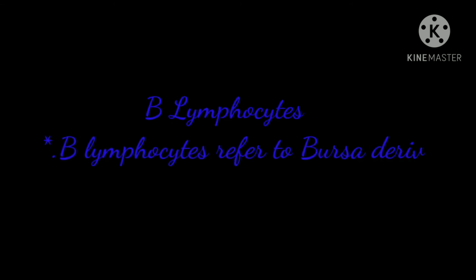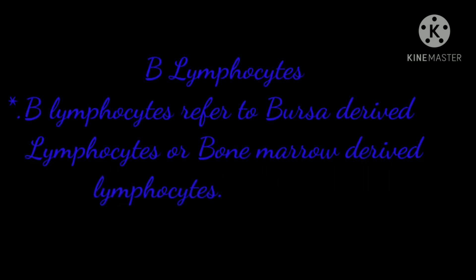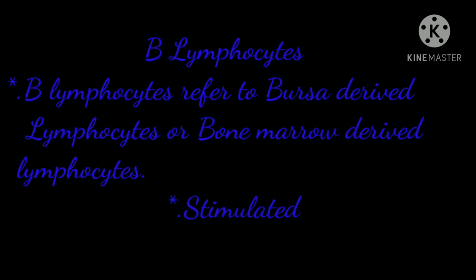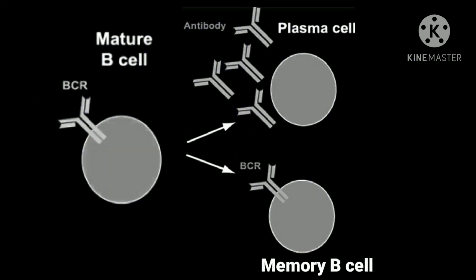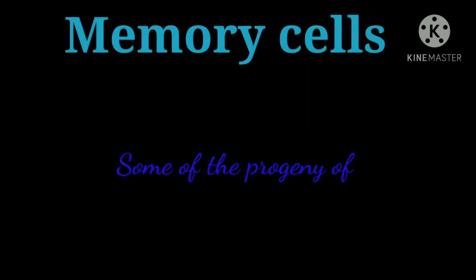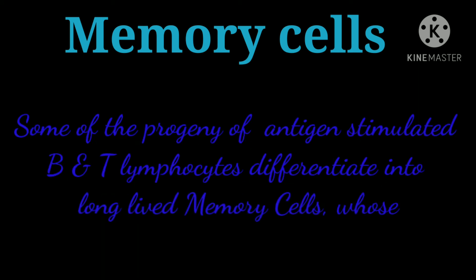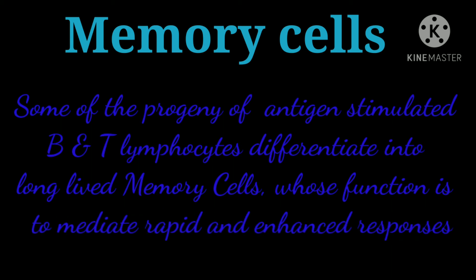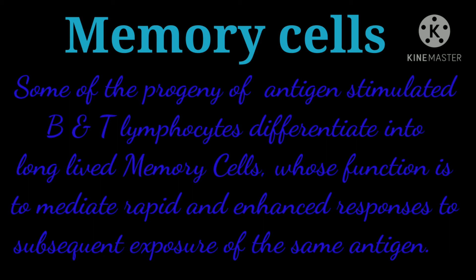B lymphocytes refer to bursa-derived lymphocytes or bone marrow-derived lymphocytes. Stimulated B cells divide and transform into plasma cells which synthesize antibodies. Some of the progeny of antigen-stimulated B and T lymphocytes differentiate into long-lived memory cells whose function is to mediate rapid and enhanced responses to subsequent exposure of the same antigen.